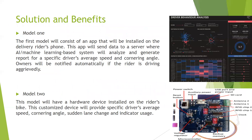Our solution comes in two phases. In the first phase, we will develop an app installed on the delivery rider's phone. This app will send data to a server where an AI machine learning-based system will analyze and generate a report for a specific driver's average speed and cornering angle. Owners will be notified automatically if the rider is driving aggressively. In the second phase, we are developing a hardware device installed on the rider's bike that will provide the specific driver's average speed and cornering angle, and also detect whether they are using the indicator properly.